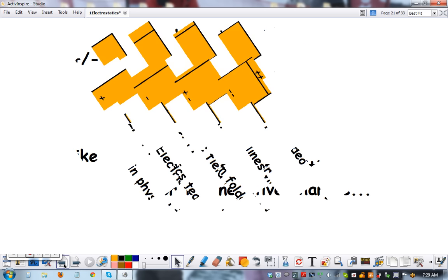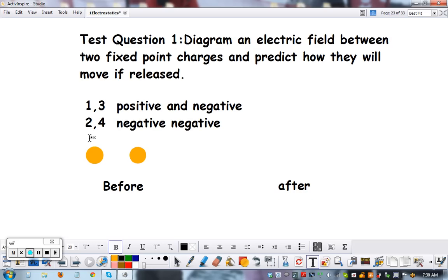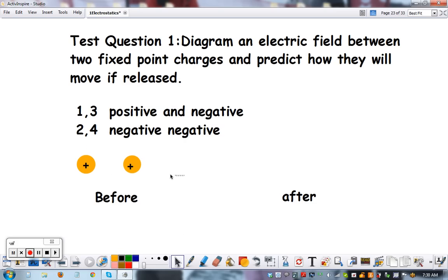These are called electric field lines. Here's a sample question: diagram electric fields between two point charges and predict how they will move if released. So I would like you to draw the arrows. It could be a positive and a positive. Draw the lines and how they will move if they are released. If they were released they would look something like this, farther apart, because like charges repel.